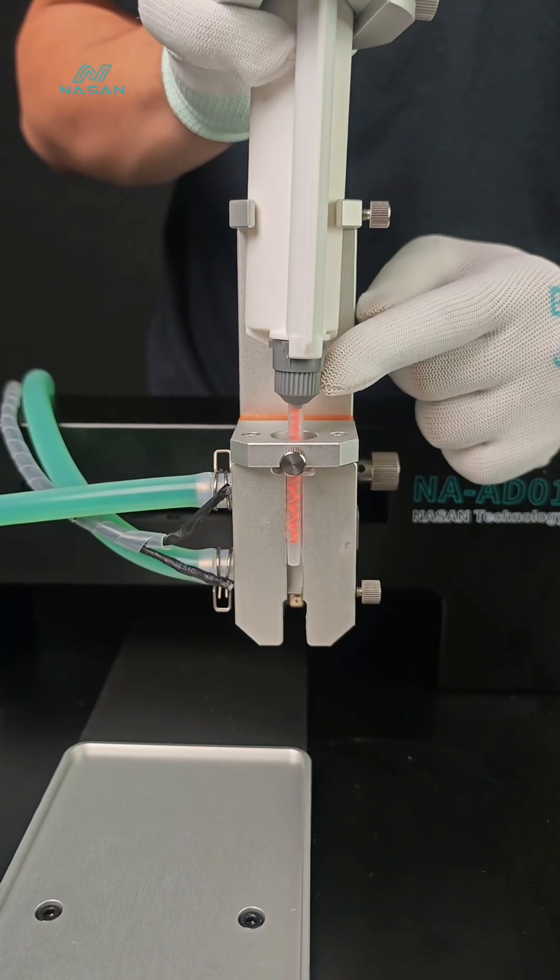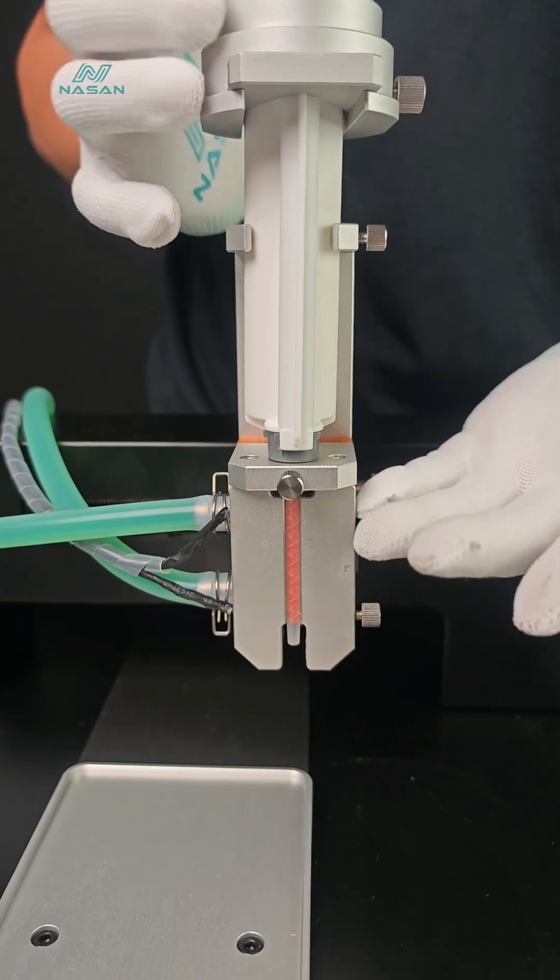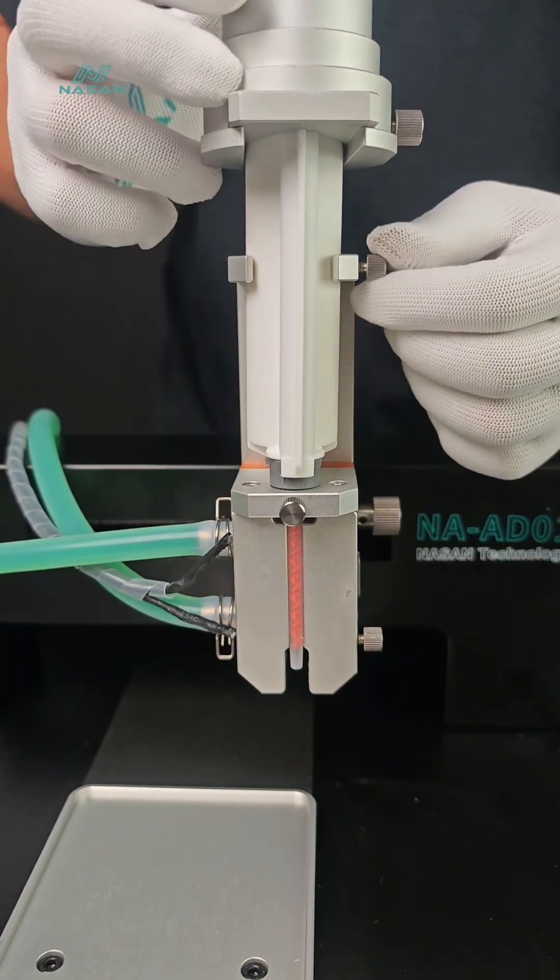Put the AB glue barrel in. Be careful when installed this buckle can be put in. This is the correct installation. So we can lock the screw and the upper one.